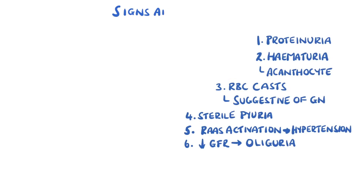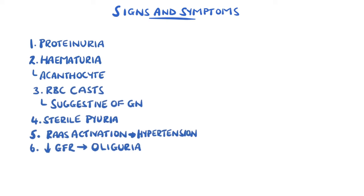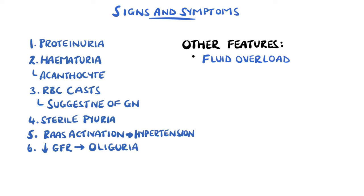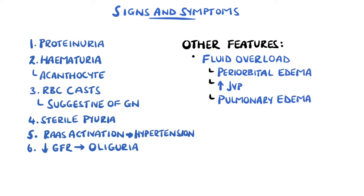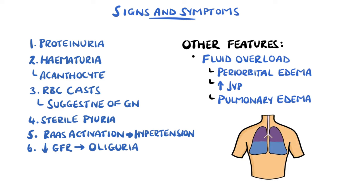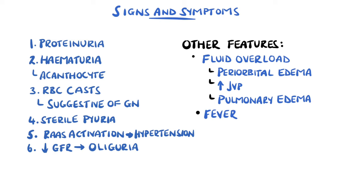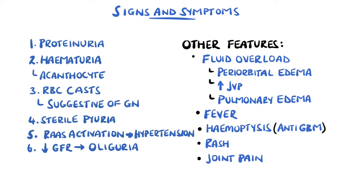Overall, the reduced protein level can lead to fluid overload, which could manifest with periorbital or peripheral edema, raised jugular venous pressure, and even pulmonary edema, which itself could present with dyspnea. Symptoms may also be the result of the underlying cause — for example, a fever in infectious causes, hemoptysis in anti-glomerular basement membrane disease, or a rash and joint pain in systemic immune causes.